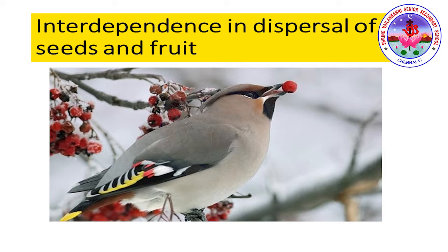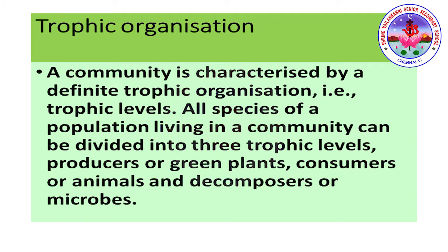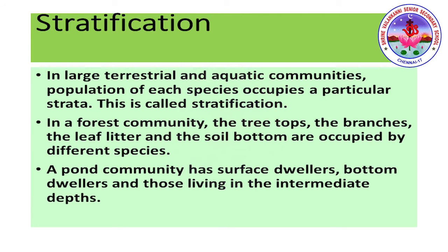The next characteristic is trophic organization. A community is characterized by a definite trophic organization, that is, trophic levels. All species of a population living in a community can be divided into three trophic levels: producers, consumers, and decomposers. These will be studied in detail in an upcoming session. Another characteristic is stratification: in large terrestrial and aquatic communities, populations of each species occupy a particular stratum.